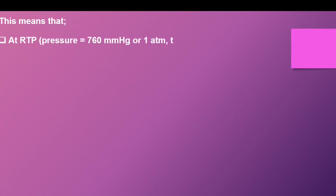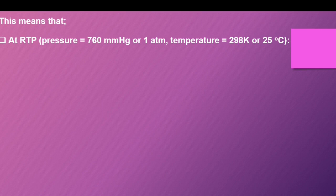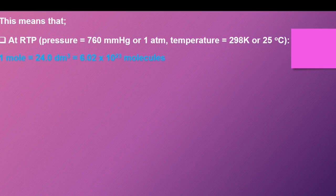At RTP — room temperature and pressure — the pressure is equal to 760 millimeters of mercury, or one atmosphere, and the temperature is equal to 298 Kelvin, or 25 degrees Celsius. At these conditions, one mole of any gas will always have a volume of 24.0 cubic decimeters and will also contain 6.02 times 10 to the power of 23 molecules.